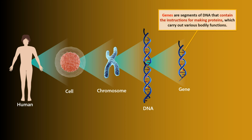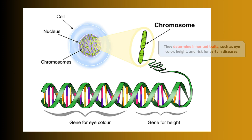Genes are segments of DNA that contain the instructions for making proteins, which carry out various bodily functions. They determine inherited traits such as eye color, height, and risk for certain diseases.